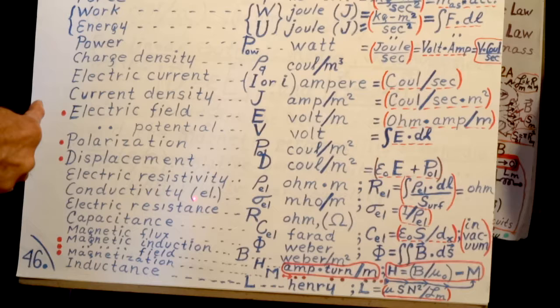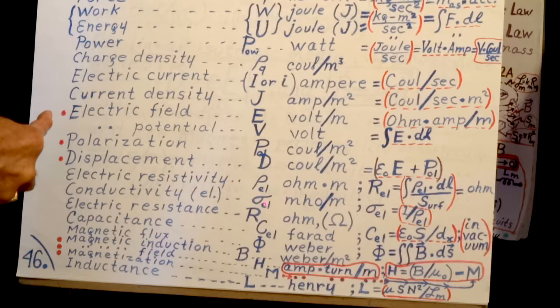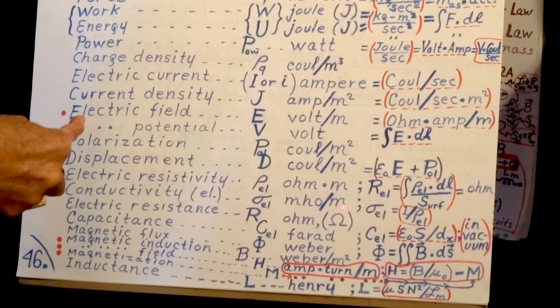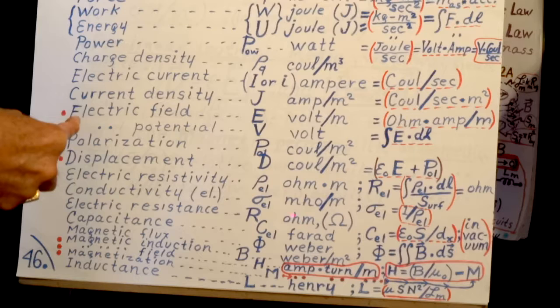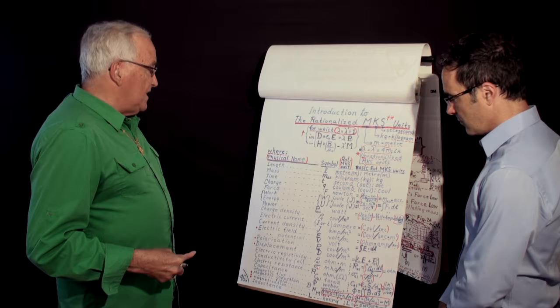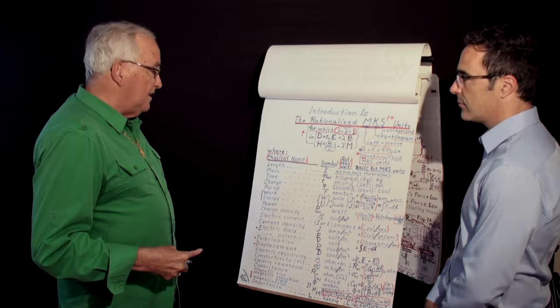This is what was in the equation V equals RI, Ohm's law. Conductivity, this is the inverse of resistivity. It's mho per meter. Mho is the inverse of ohm. So conductivity is the inverse of resistivity. It's one over the other.